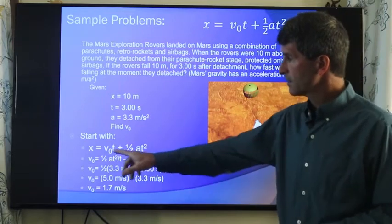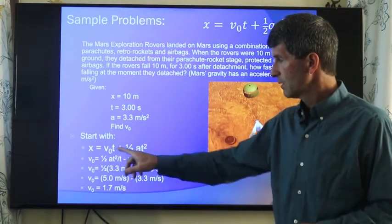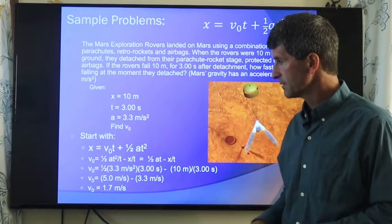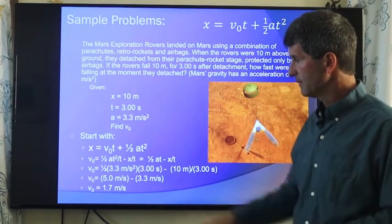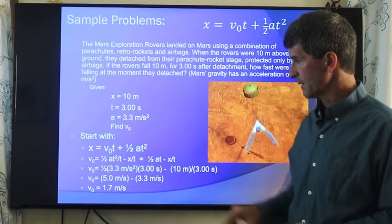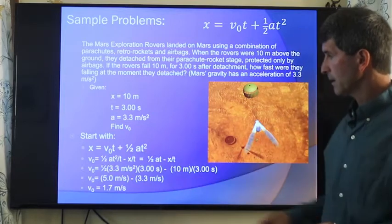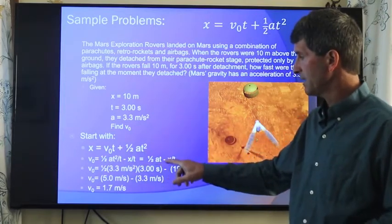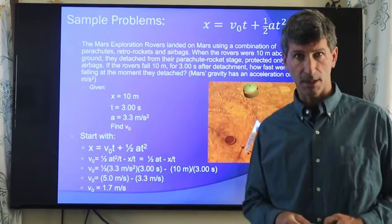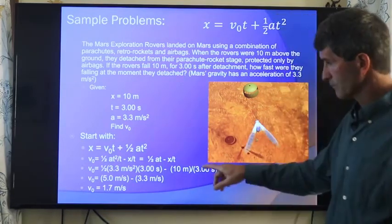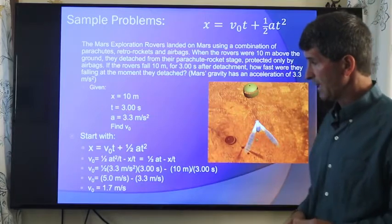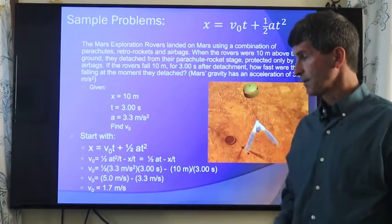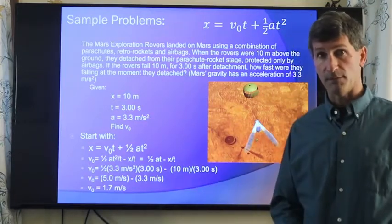So again, solve for v₀. We're going to subtract one-half at squared from both sides. Divide both sides by t. Again, you can see these different steps here. We then plug in our answers. We're left with the initial velocity is one-half at minus the displacement divided by the time. And we get that it detaches from the parachute at 1.7 meters per second.